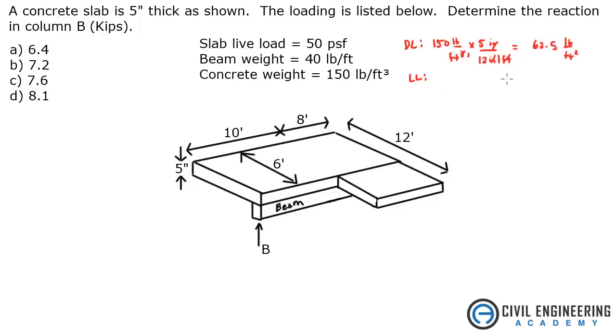Live load was given as 50 pounds per square foot. If you add those two together, that's 112.5 pounds per foot squared. So now that we've got that loading, we can start looking at this slab.